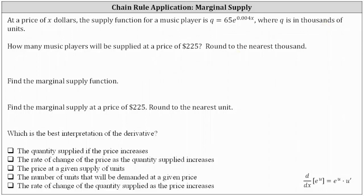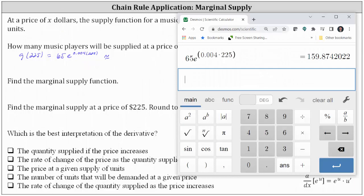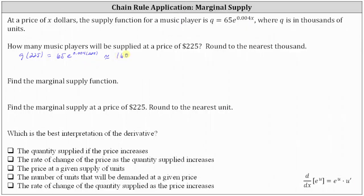To determine how many music players will be supplied at a price of 225 dollars, we need to evaluate the supply function at x equals 225. So q(225) equals 65 times e raised to the power of 0.004 times 225. Because we're told to round to the nearest thousand and q is in thousands, we round q(225) to the ones place, which gives us 160 — indicating 160,000 music players will be supplied at a price of 225 dollars.